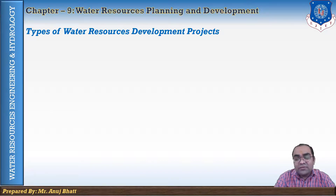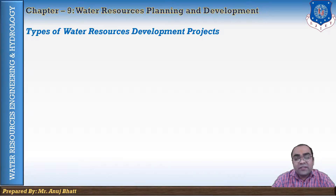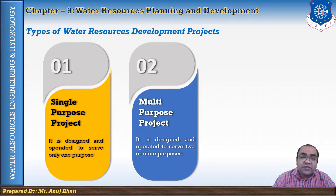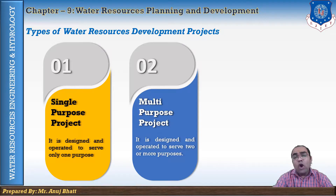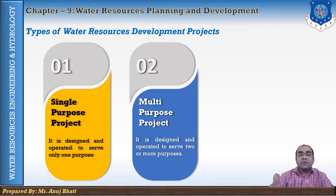The water resources development projects are usually classified on the basis of number of purposes served by that particular project. According to that, they are classified into two categories: first, the single purpose project, and second, the multipurpose project. A single purpose project is the one which is designed and operated to serve only one purpose. For example, an irrigation project, a water supply project, or a project done for navigation purpose and fishing purpose — these are individual purposes fulfilled by a particular project.